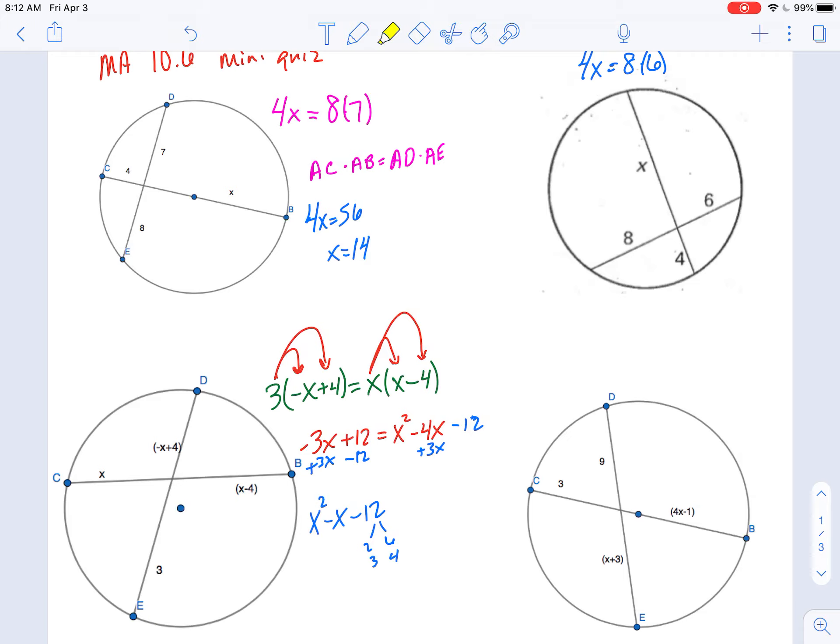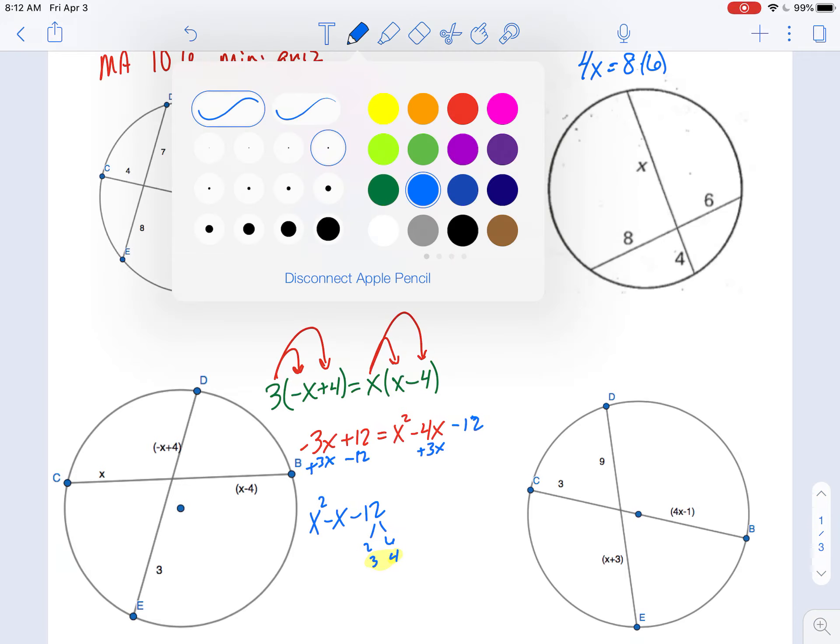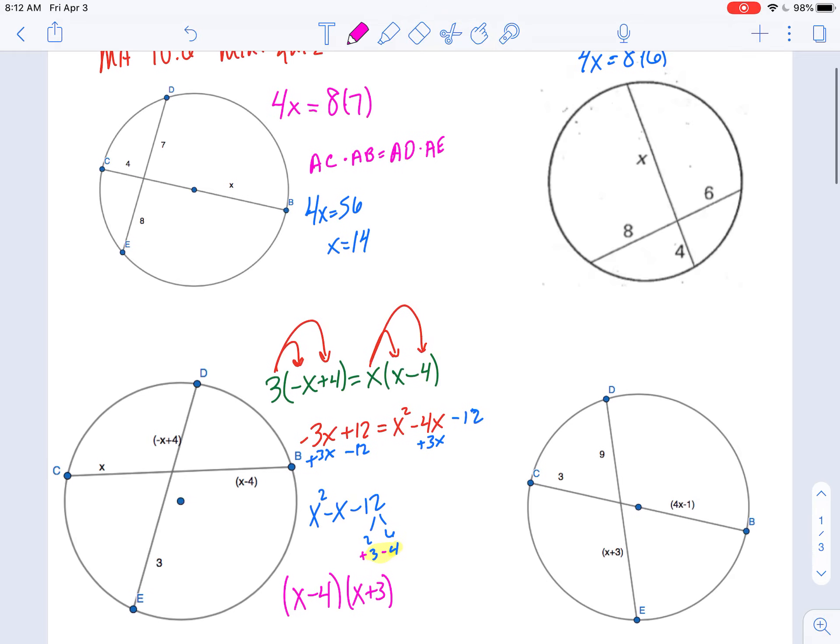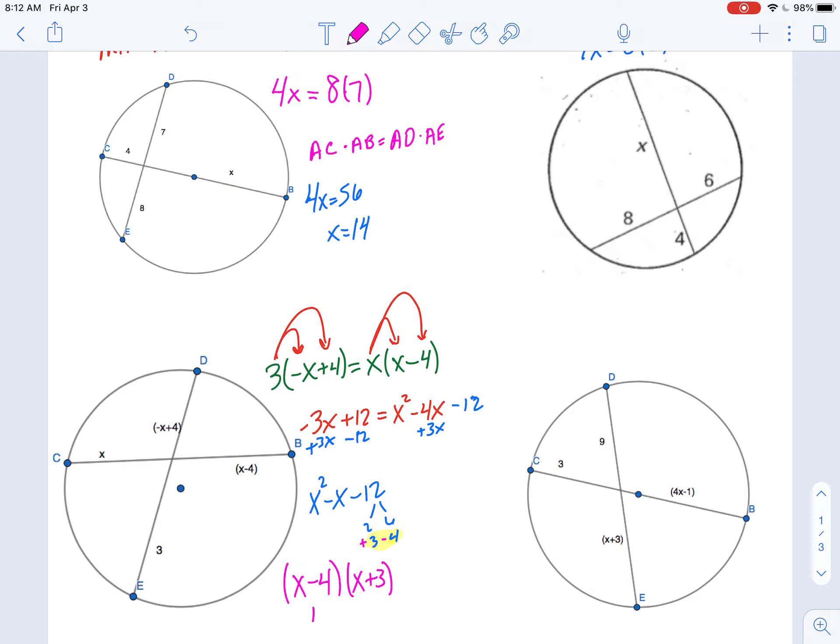And we'll look at the factors of 12, so 2 and 6, 3 and 4, 1 and 12. And I want those factors that are going to add or subtract to a negative x or a negative 1. So which pair is 1 apart? 3 and 4 have a difference of 1. And if it's a negative 1, I want a negative 4 and a positive 3. So I want a negative 4 and a positive 3.